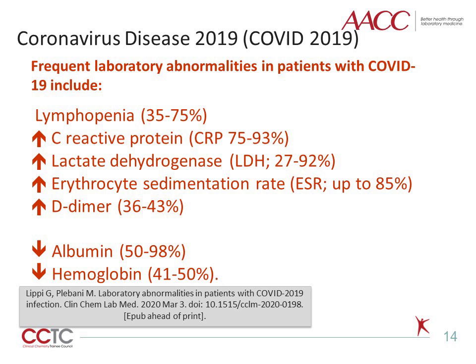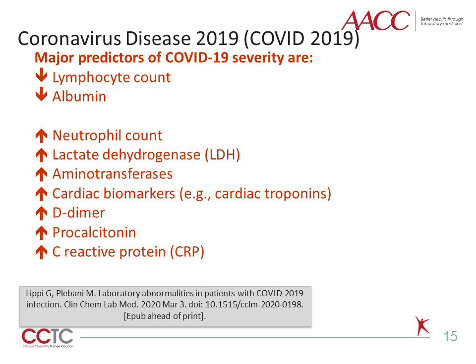According to a recent literature review, the most frequent laboratory abnormalities found in patients with COVID-19 encompass lymphopenia in 35–70% of cases, increased CRP in 75–93% of cases, increased LDH in 27–92% of cases, increased ESR in up to 85% of cases, increased D-dimer in 36–43% of cases, low serum albumin in 50–98% of cases, and low hemoglobin values in 41–50% of cases.